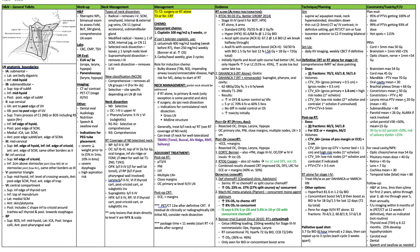Level 1b is your submandibular lymph nodes. The superior border is the top of the submandibular gland, the posterior border is the posterior edge of the submandibular gland, and the inferior border is the midhyoid.